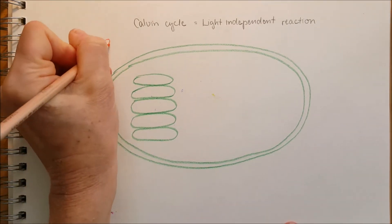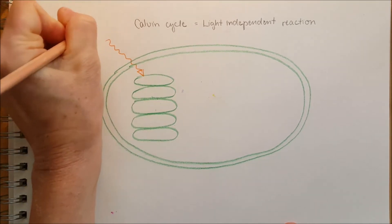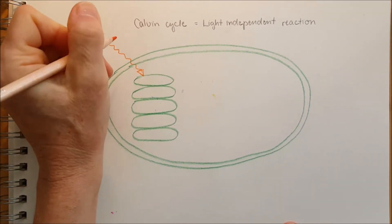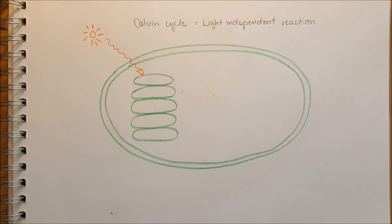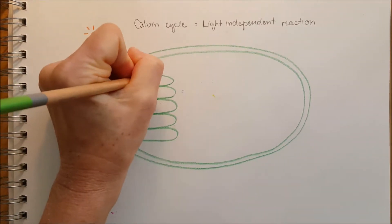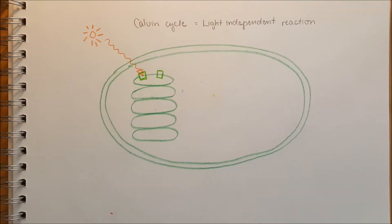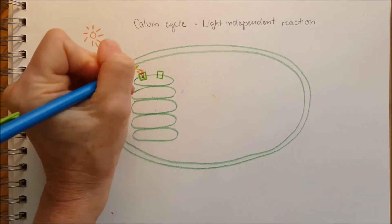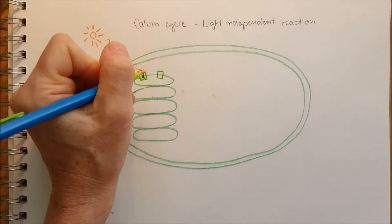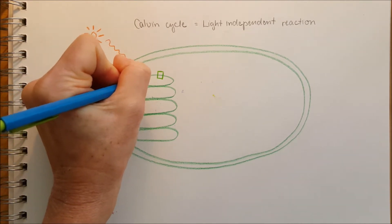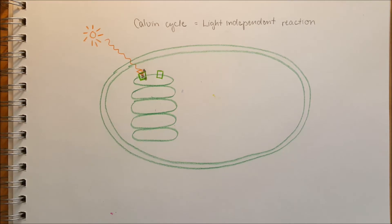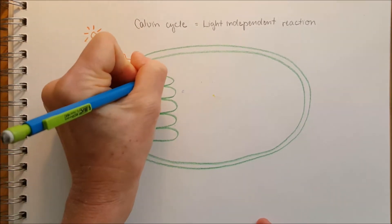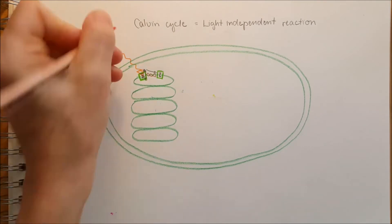Here in the thylakoid membrane there are the pigments: chlorophyll A, chlorophyll B, xanthophyll, carotenoid. Light comes from the sun as photons into photosystem II. The light-harvesting complexes harvest the energy of the photon and pass it to the reaction center complex where chlorophyll A loses one electron. That electron travels through the electron transport chain — this was covered in the previous video.